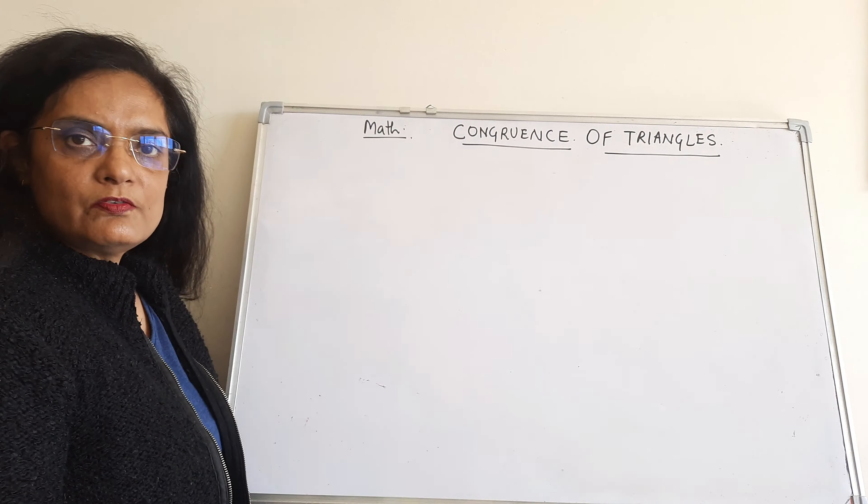And for congruent triangles, let's see. Here we have triangle ABC and triangle DEF. If vertex A falls on vertex D, vertex B falls on vertex E, and vertex C falls on vertex F.